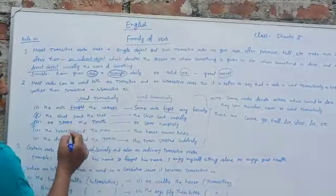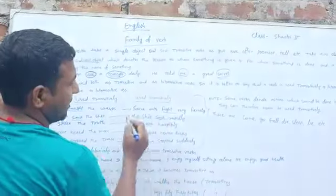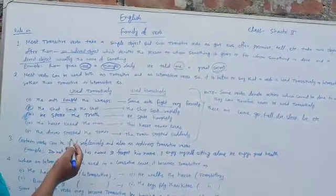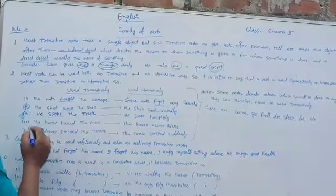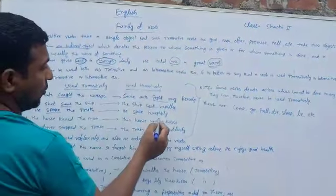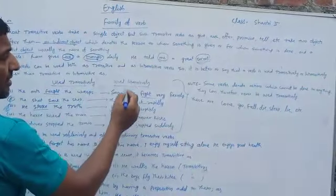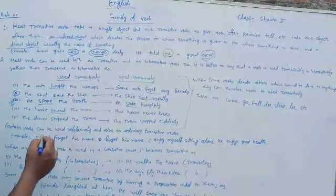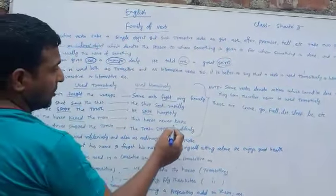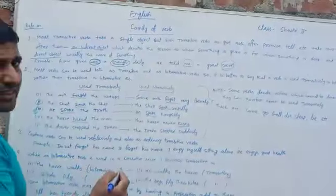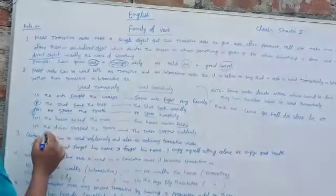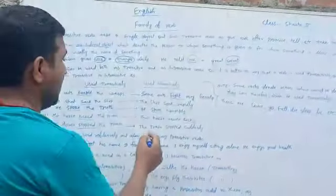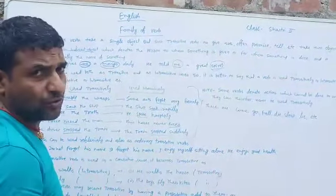More examples: 'The sword sank the ship' — 'sank' used transitively. 'The ship sank rapidly' — 'sank' used intransitively. 'He spoke the truth' — 'spoke' used as a transitive verb. 'He spoke' — used intransitively. 'The horse kicked the man' — 'kick' used as a transitive verb. 'This horse never kicks' — 'kick' used as intransitive. 'The driver stops the train' — 'stop' used transitively. 'The train stops suddenly' — 'stop' used intransitively.